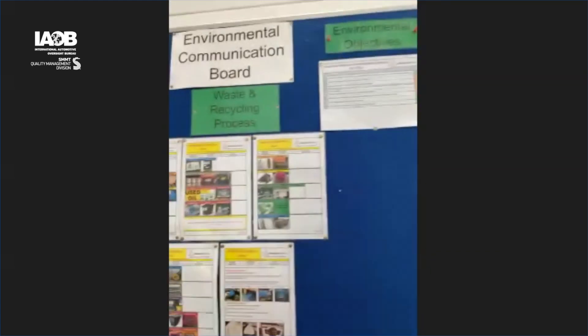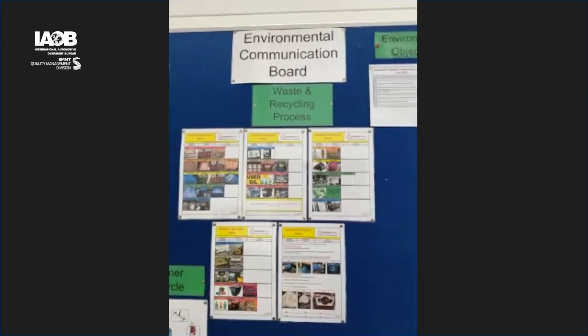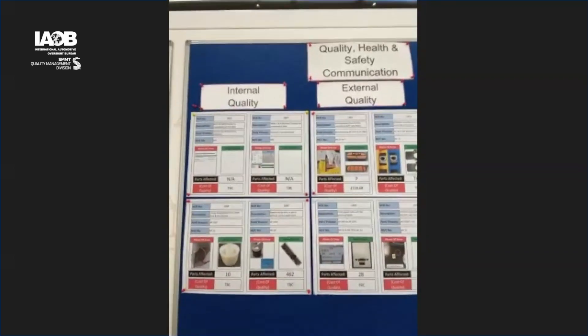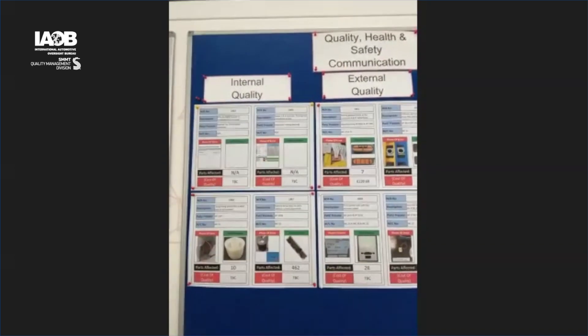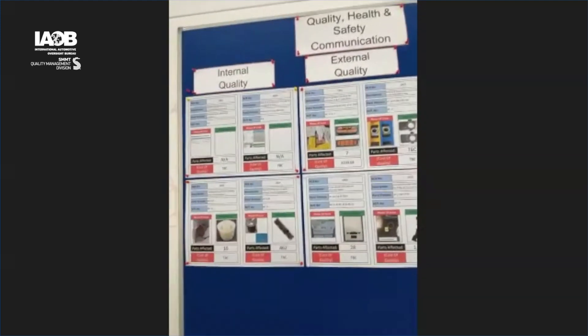So Andy, can you show me how the objectives are communicated to the shop floor? We have our information boards regarding environmental quality, health and safety, and continuous improvements — and these are the current status of the boards. We've got the environmental policies, looking at the standard operation sheets and how we manage our environmental procedures. We've then got our internal quality, looking at the customer and internal raised NCRs that we received, and the corrective actions we've done in terms of closing them out.